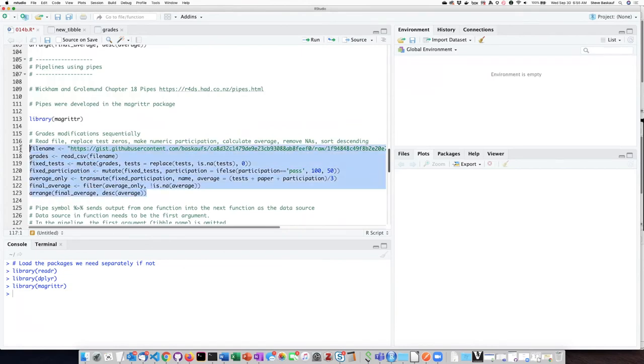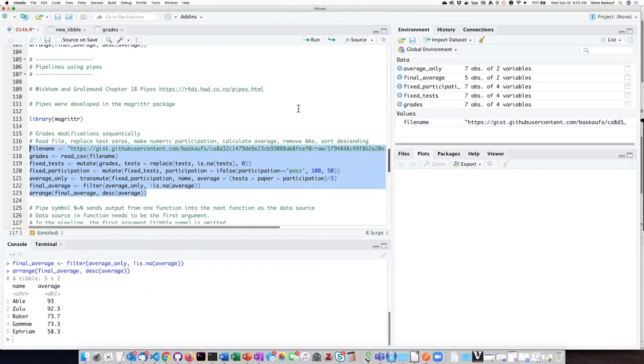If I highlight all of these lines at once and click run, it will run through them all one at a time and here I can see my output tibble which is great, just the way it was before.